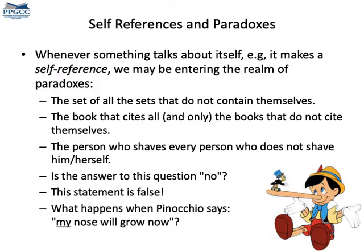Usually, paradoxes emerge when we have self-referencing systems — that is, logical systems that allow entities referring to themselves. For instance, as a metaphor, what would happen if Pinocchio said, 'my nose will grow now'? Is the statement true or false? Actually, can its falsehood or its truthfulness be determined at all?